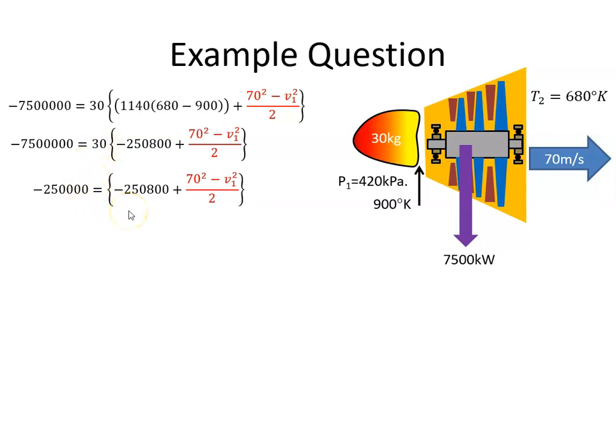Now I'm going to bring the 250,800 across to this side. So we have 250,800 minus 250,000, that just gives me 800. Multiply both sides by 2. And then V1 across to this side and the 1600 back here. So I get expression V1².